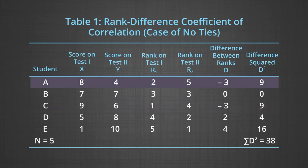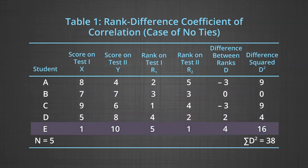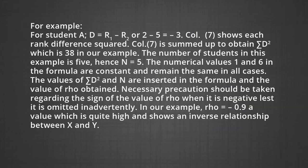In column four, Student A with the next highest X score of eight gets rank 2, Student B rank 3, Student D rank 4, and Student E with the lowest score gets rank 5, which equals n. The same procedure is repeated for ranking on Test 2, with ranks written in column five. In column six, rank differences for each student are listed. For Student A, D equals R1 minus R2, or 2 minus 5, which is minus 3. Column seven shows each rank difference squared, and when summed gives sigma D squared equal to 38.